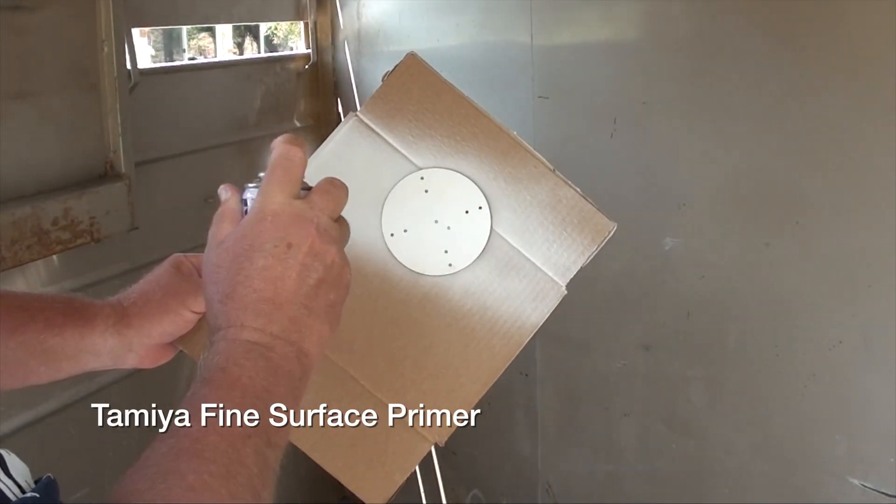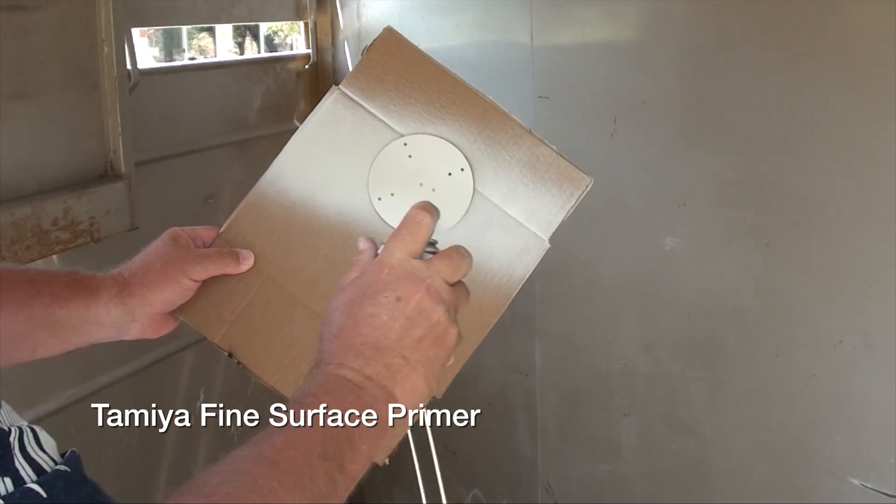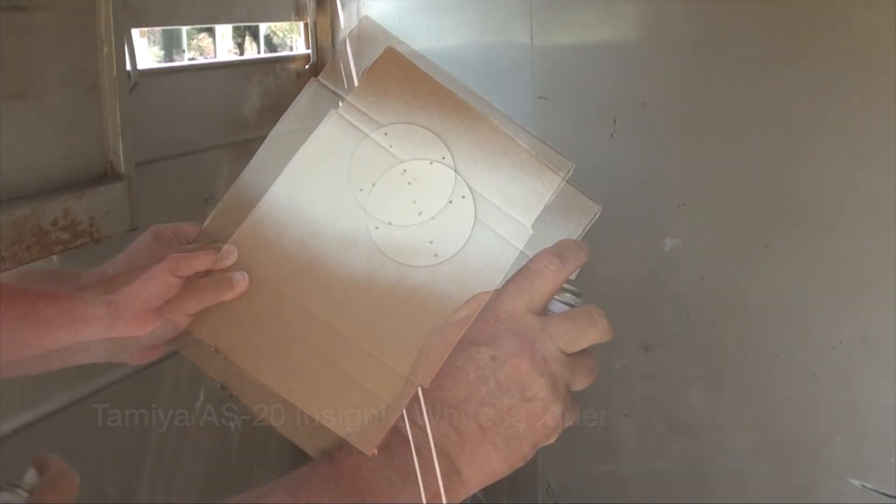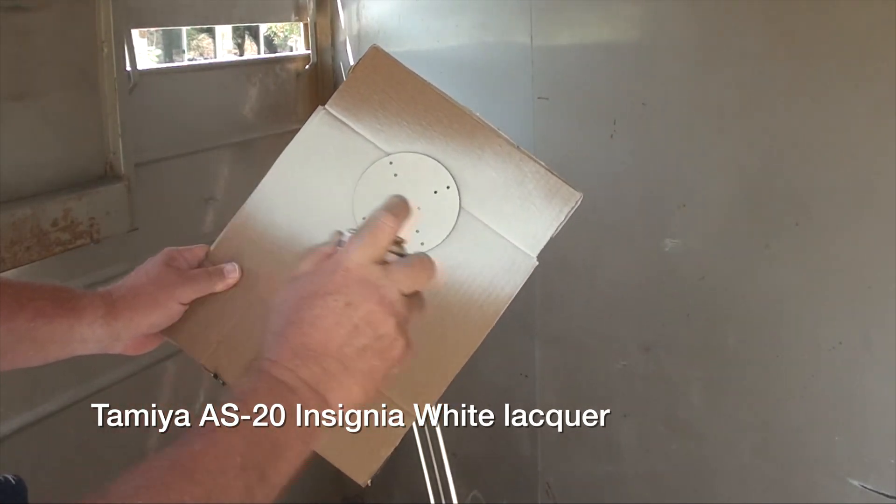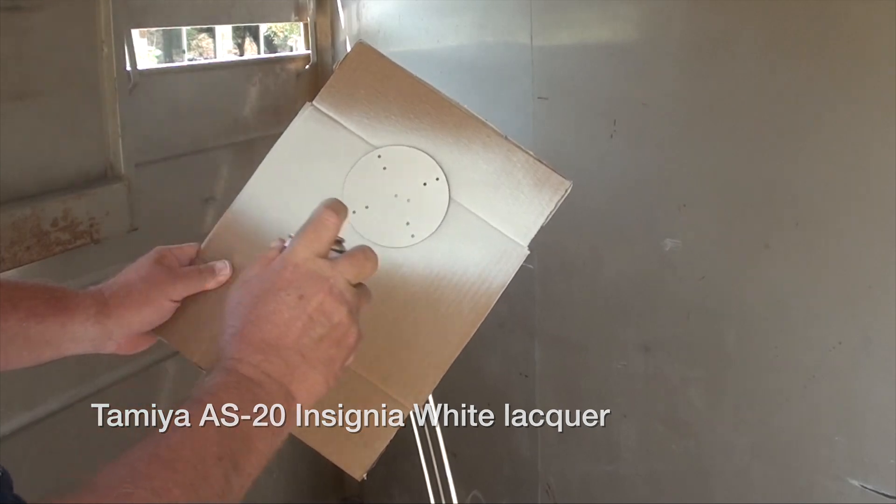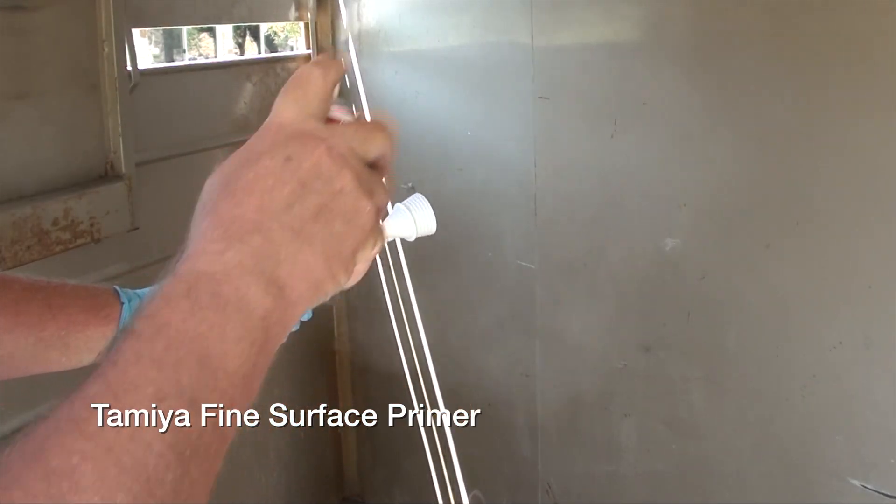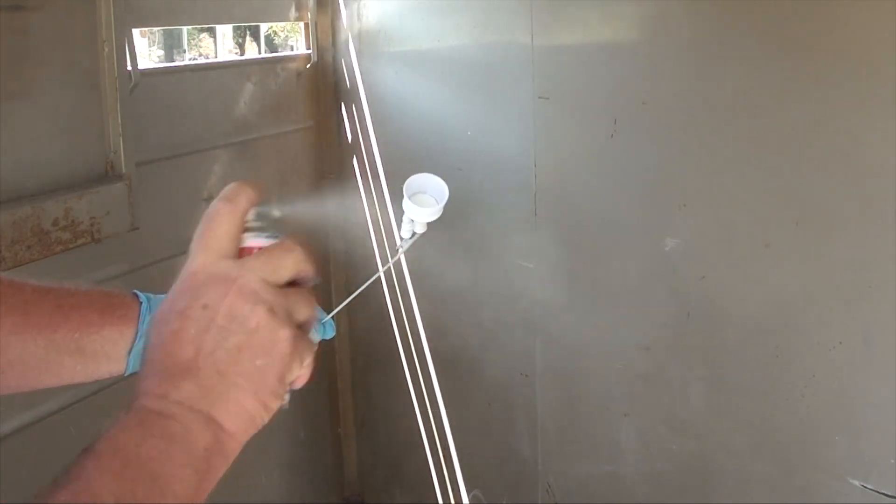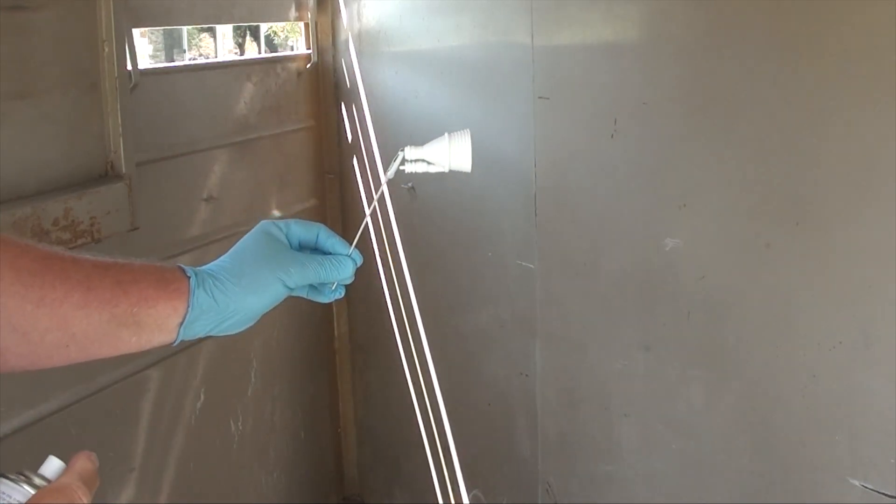We're in the paint booth to shoot two layers of the Tamiya primer onto the nozzle base with about seven minutes between coats. Next we spray a couple of coats of AS-20 insignia white lacquer, which is essentially a very light gray. Next the nozzles are primed with Tamiya primer, making sure to hit the inside of the nozzles. The primer doesn't need to be applied heavily to the point of being opaque. Just a couple of light coats are adequate.